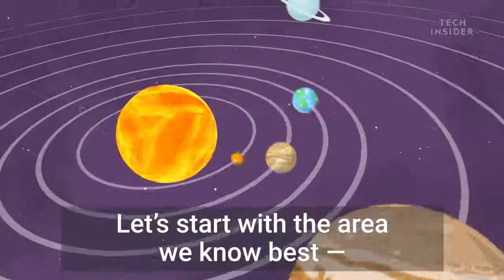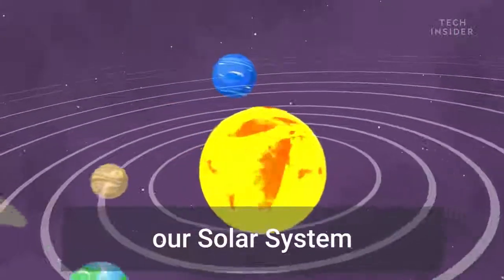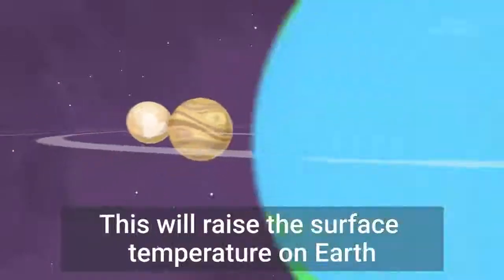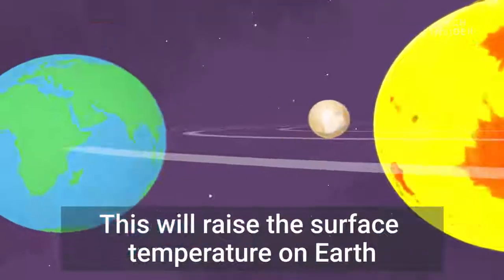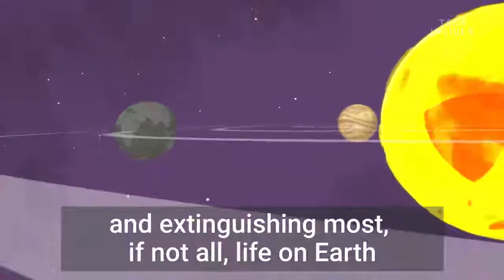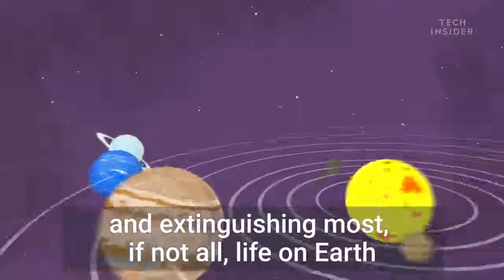Let's start with the area we know best, our solar system. One billion years from now, the sun will be 10% brighter than it is today. This will raise the surface temperature on Earth, causing oceans to evaporate faster and extinguishing most, if not all, life on Earth.